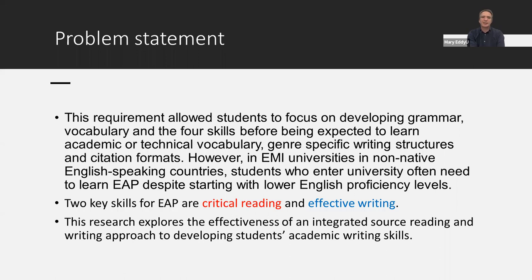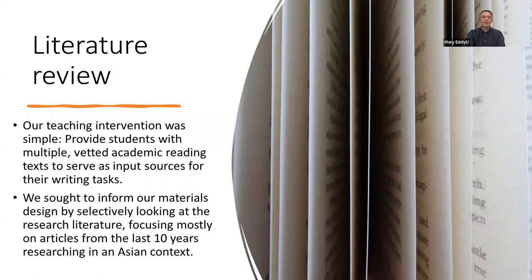The two key skills we're looking at are critical reading skills and effective academic writing. Our research explores the effectiveness of integrating source readings and writing tasks to develop students' academic writing skills. Our teaching intervention was relatively simple: we wanted to provide students with multiple vetted, level-specific texts to read before they sit down and do the writing tasks — giving them some reading to help them with the writing. There's a sample available on the Edzilla page and on the Padlet connected to this presentation.